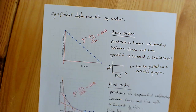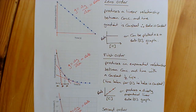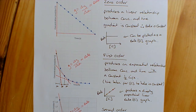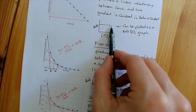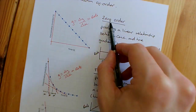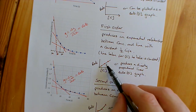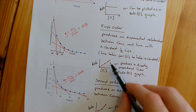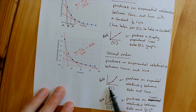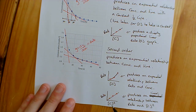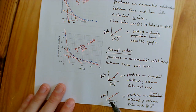A huge part of this topic is about plotting graphs, taking tangents, working out the gradients of those tangents, and knowing that the gradient equals the rate. To summarise: on a rate-concentration graph, if the rate doesn't change when concentration changes it is zero order; if the rate increases in a directly proportional linear relationship it is first order; if the rate increases exponentially it is second order — and you confirm second order by plotting rate against concentration squared, which produces a directly proportional linear relationship.